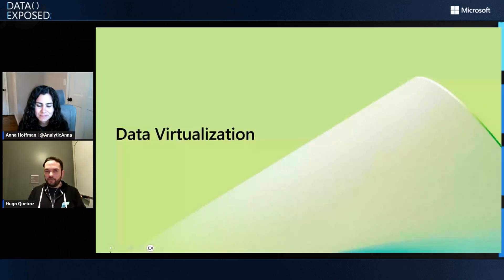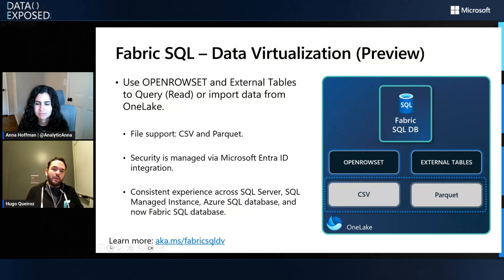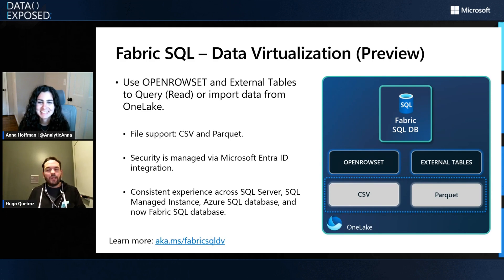What's going on in this space? Quite a lot. We are announcing pretty soon the preview of OpenRowset and external tables for data virtualization for Fabric SQL Database. That means customers can now query CSV and Parquet files for read or ingestion purposes. We established the security integration using managed identity, and now with Fabric SQL Database, we have a consistent experience across all SQL flavors — SQL Server on-prem, Azure SQL Database, SQL MI — it works the same way across the board.